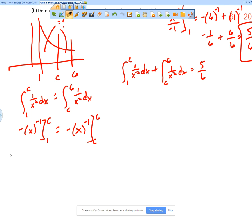So you're going to get negative C to the negative first minus negative 1 to the negative first. And then that's going to equal negative 6 to the negative first minus negative C to the negative first. Now notice this is an equation where C is the only variable in the equation. So this means negative 1 over C plus 1 equals negative 1 over 6 plus 1 over C. And so now you have an equation involving only C.